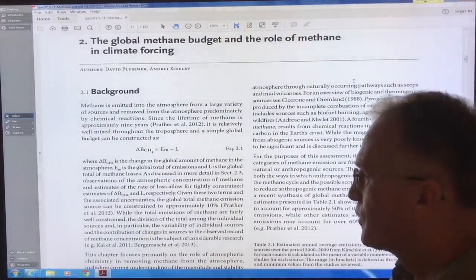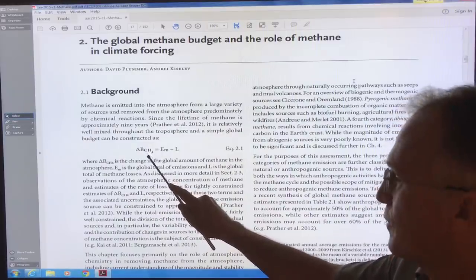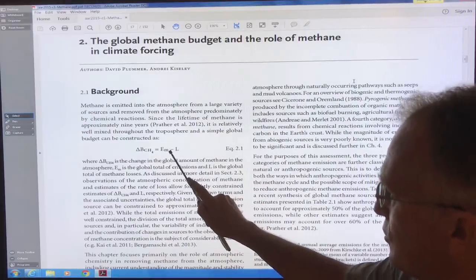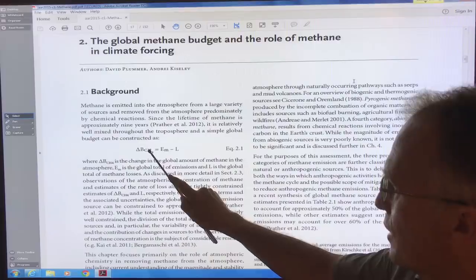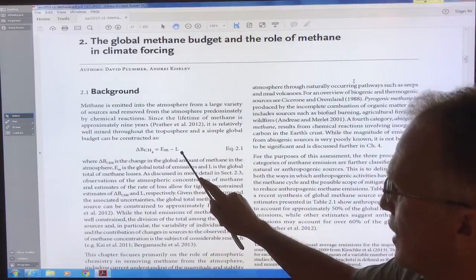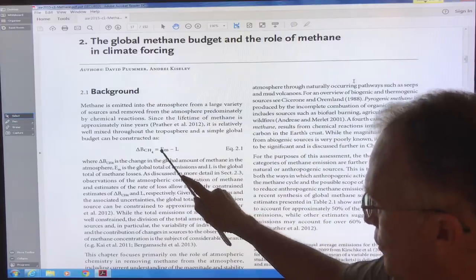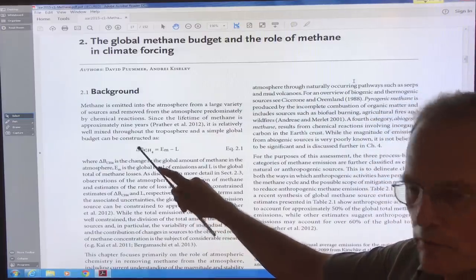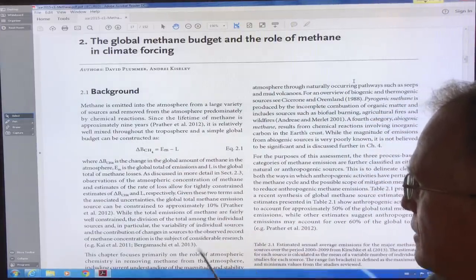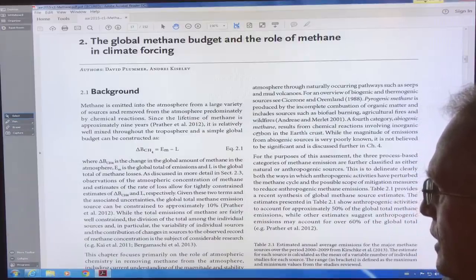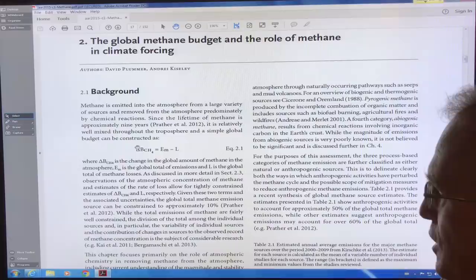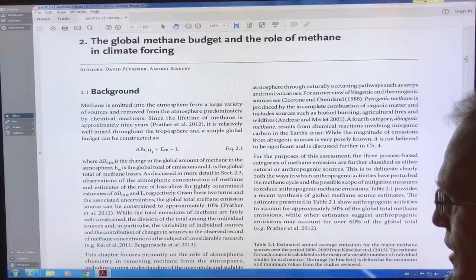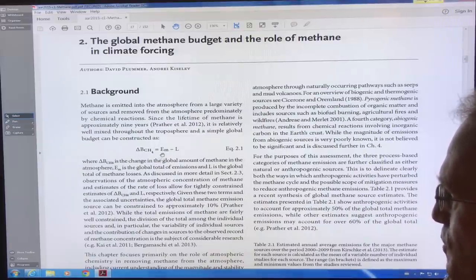So think of a bathtub. This would be the level of water in the bathtub. This would be water coming in from the taps. This would be water going out the drain. So if you increase the taps, the sources, then the water level goes up. If you decrease the losses, the level goes up. If you increase the losses, so make a bigger drain, then the level of water goes down. So it's just a balance here.